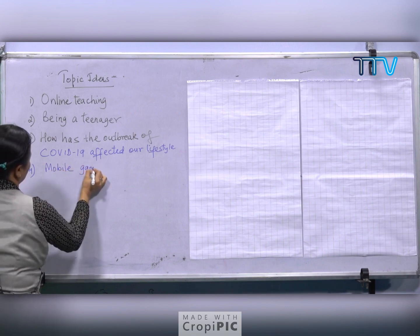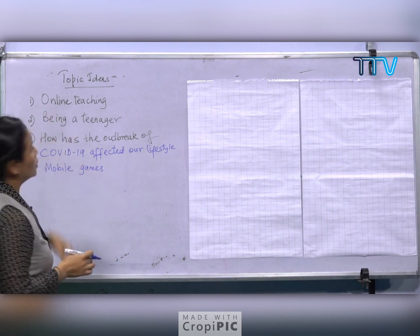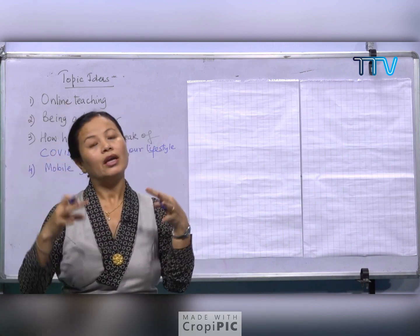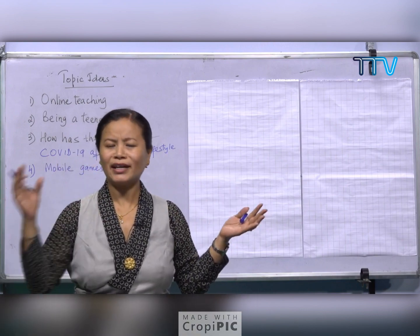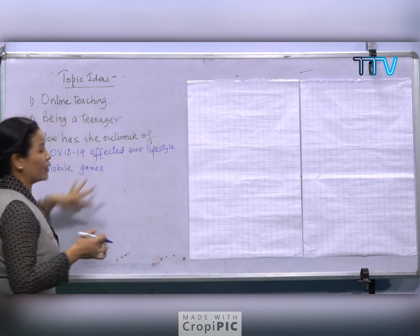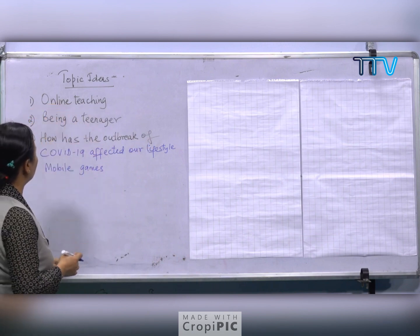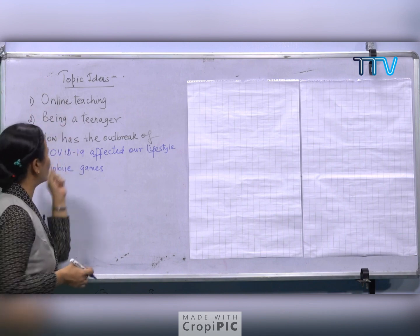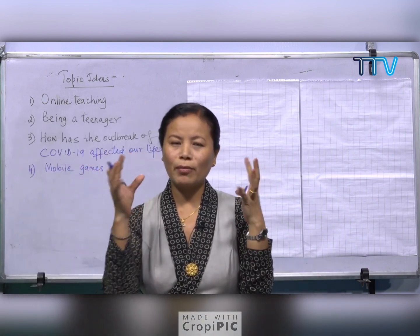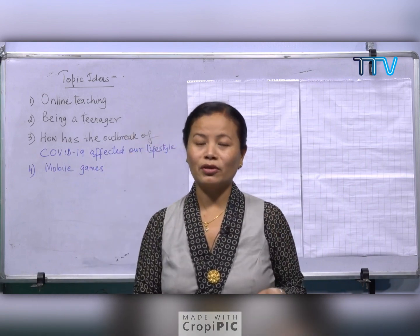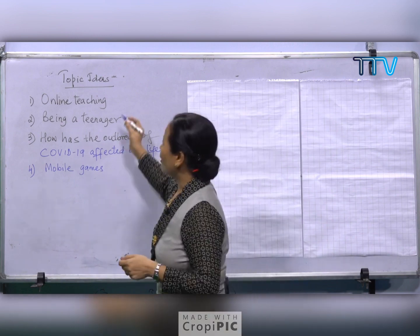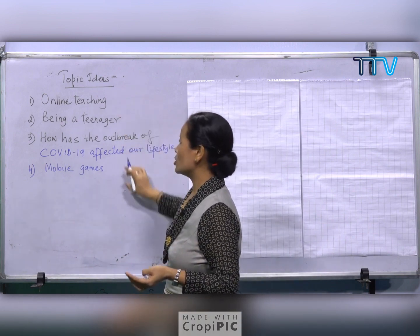Mobile games. So we won't take a lot of time thinking about topic ideas. When you do your own writing you have time — unless you are sitting for an exam. You can think of as many topics as possible. Right now I'm going to choose from these four topics: online teaching, being a teenager, how has the outbreak of COVID-19 affected our lifestyle, and mobile games. Now it's your responsibility to decide which one to choose.